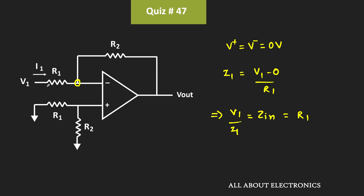The value of R1 is 47 kΩ, so the input impedance seen by looking into voltage source V1 is equal to 47 kΩ.